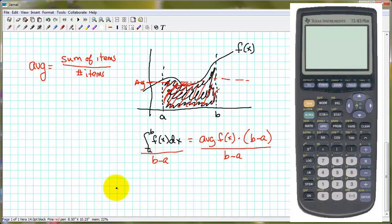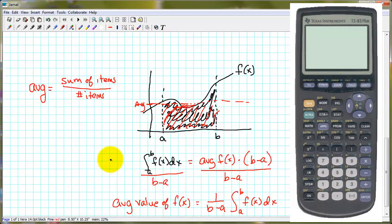And we get our average value formula that we're going to use in our problem, which is 1 over b minus a times the definite integral from a to b of f of x dx. So I just wanted to go through this so you can kind of see where the formula comes from instead of just giving you a formula that you can use. Now for your problems and your homework, if you need to, you can just memorize that formula and use it, but I hope the background helps. So let's go back to our problem.